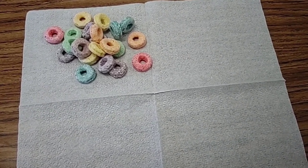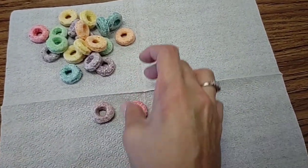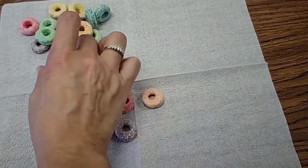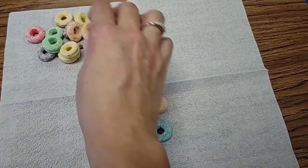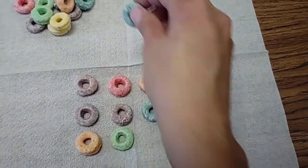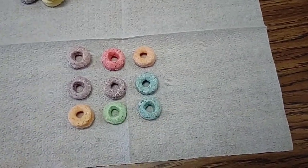We can also make an array using cereal. Let's make three times three. So we need three rows with three in each. This is our second row of three and our third row.